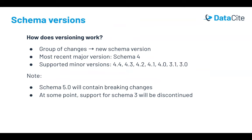A group of changes is released together as a new schema version approximately every one to two years. Each schema version is either a major version or a minor version. The most recent major version, as of April 2023, is schema 4, and the most recent minor version is 4.4.